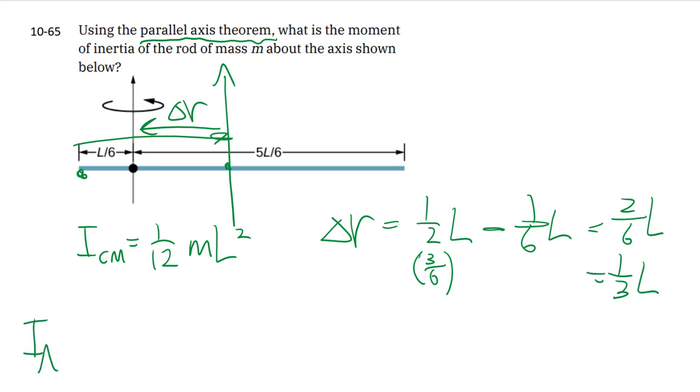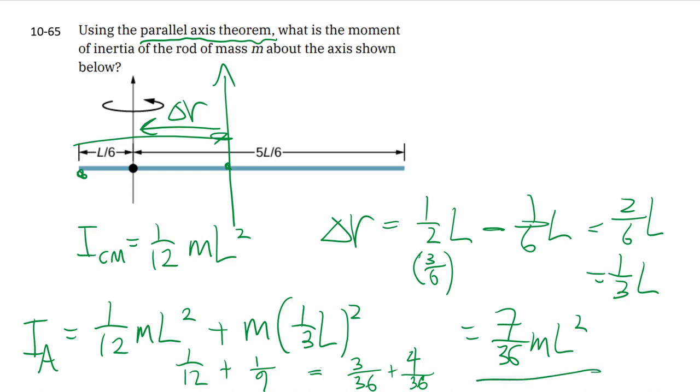So then we can use the parallel axis theorem to basically shift the axis. We have the center mass moment of inertia plus M delta R squared. So then we have common factors of M L squared on both terms. And then you have one twelfth plus one third squared, that's a nine. So that's equal to, let's use 36 as a common denominator, which gives us seven over 36 M L squared.